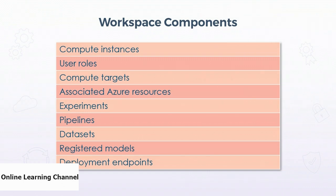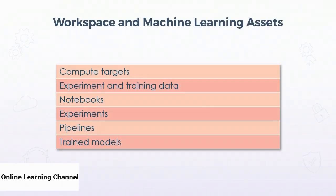One of the cooler things in ML workspaces are endpoints. Once you have a registered model that you want the outside world to access, you can create an endpoint. The endpoint is a globally accessible URL that allows users to access your model and start using it like a web API. You still need a key to access the API, so it's not wide open on the internet, but if you have that key you can access it from anywhere.